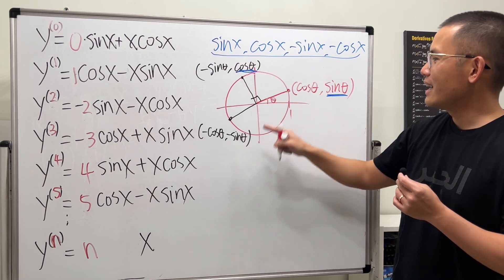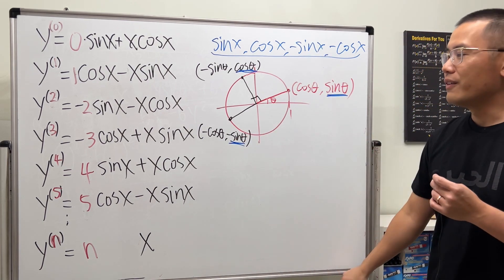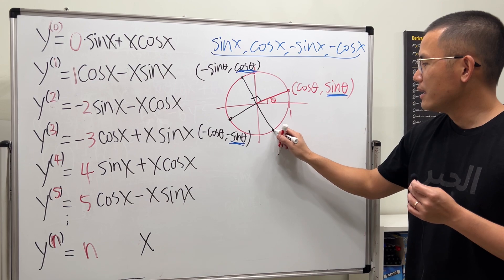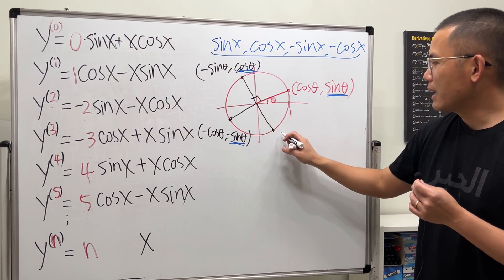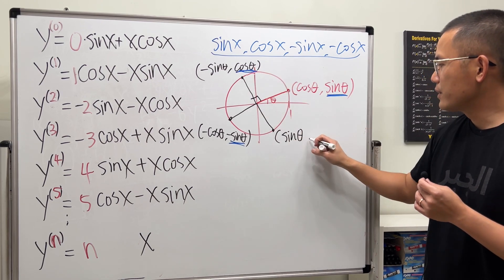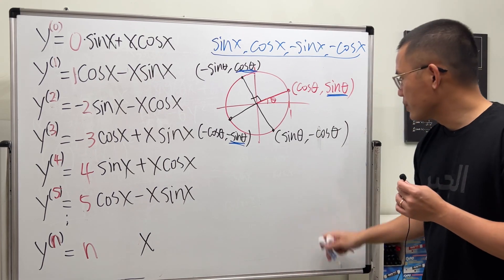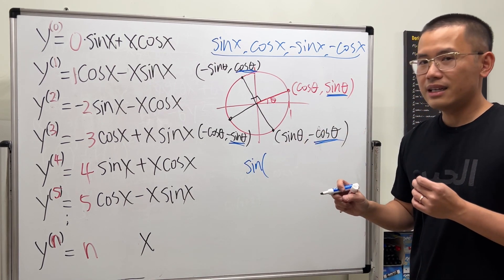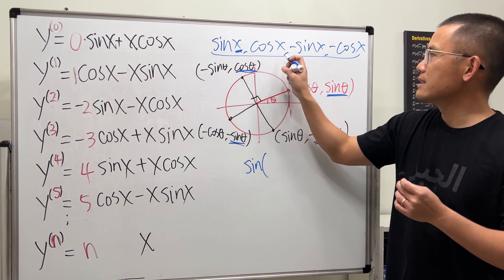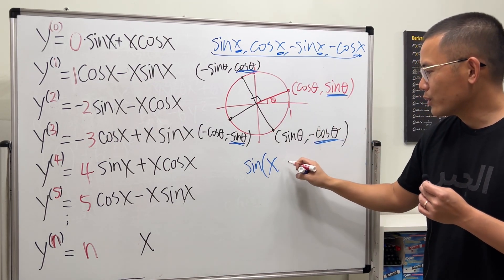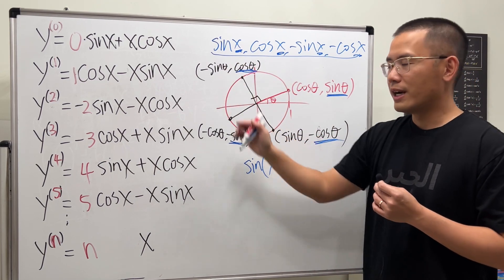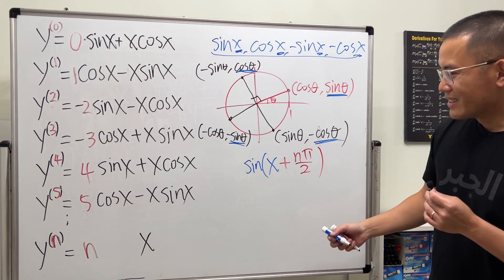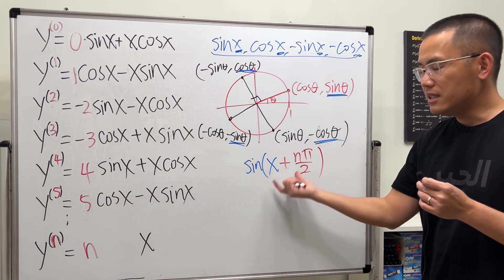So the y-coordinates cycle through: sine θ, cosine θ, negative sine θ, negative cosine θ. One more 90-degree rotation gives positive sine θ and negative cosine θ. To describe this pattern, start with sine and use x as the original input, then add n times pi over 2 to the argument each time.